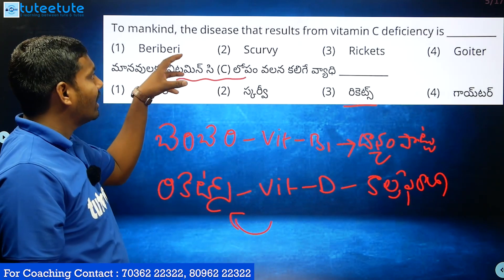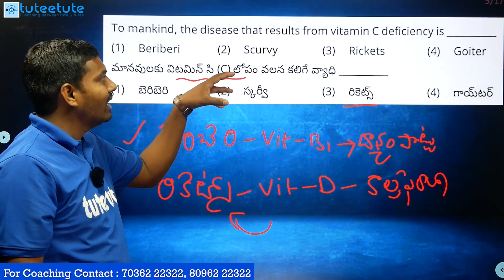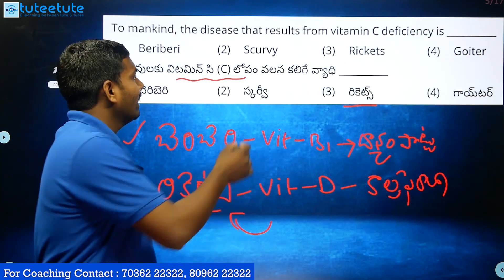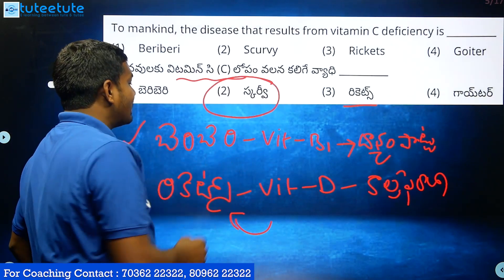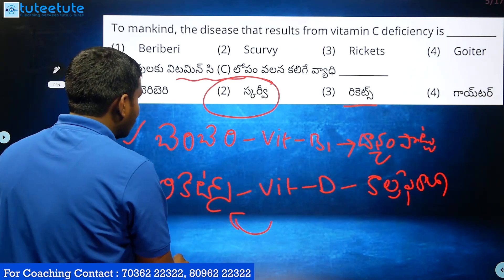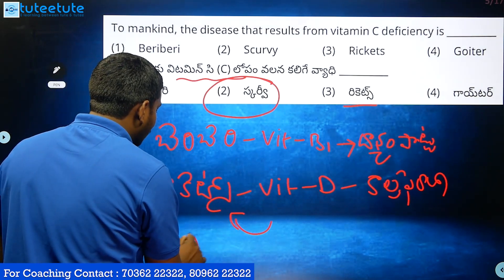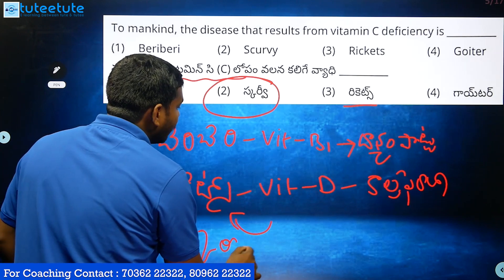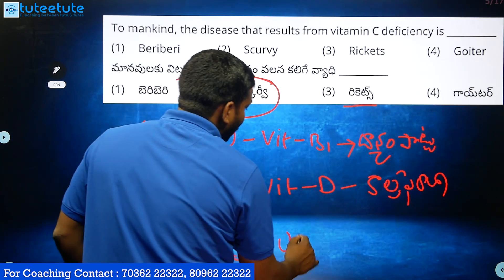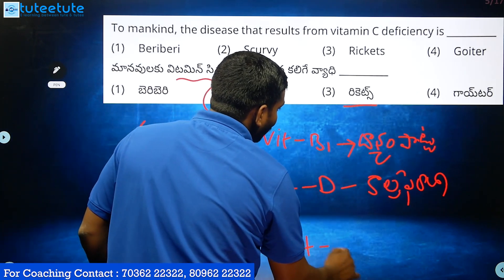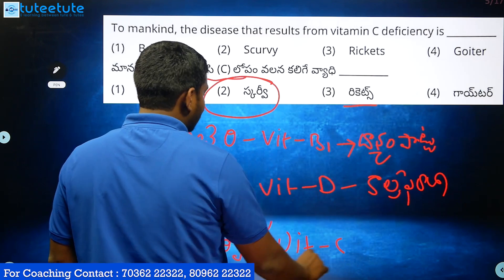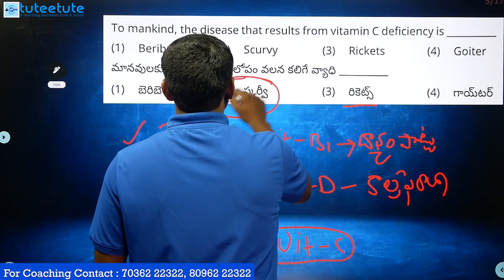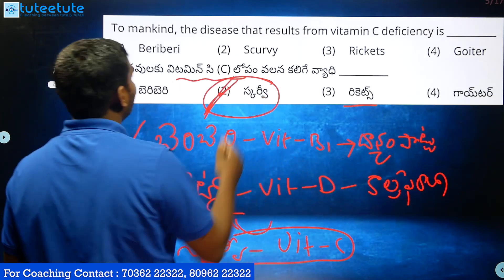The disease that results from Vitamin C deficiency is Scurvy. Vitamin C deficiency is called Scurvy. So the correct answer is Scurvy.